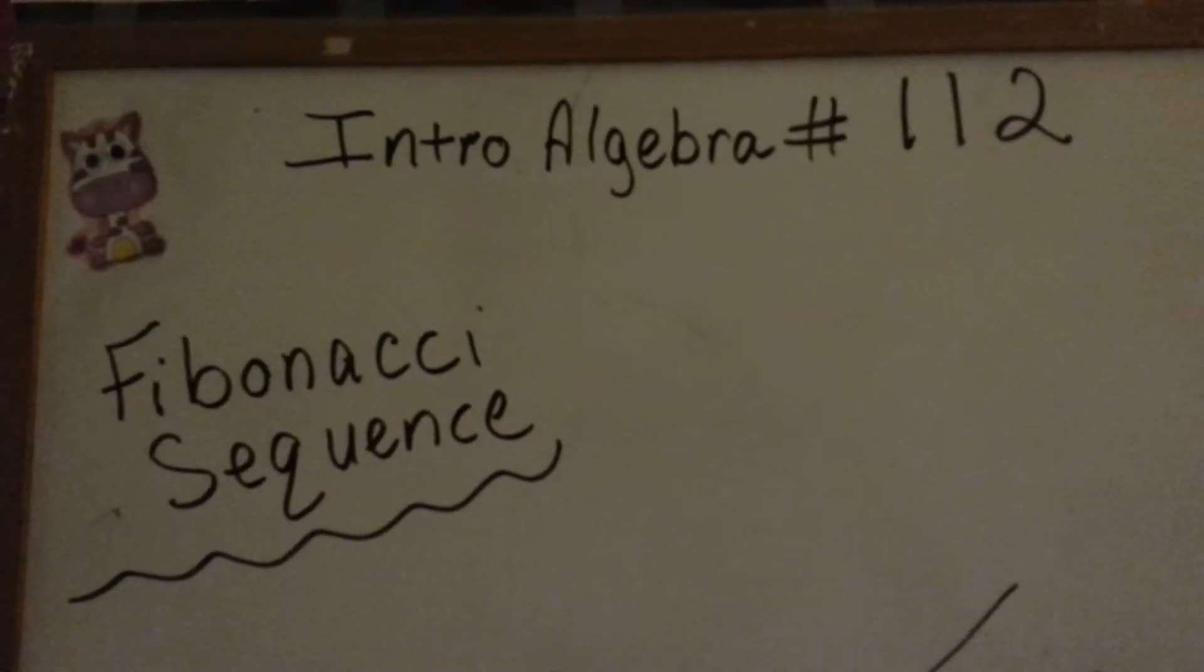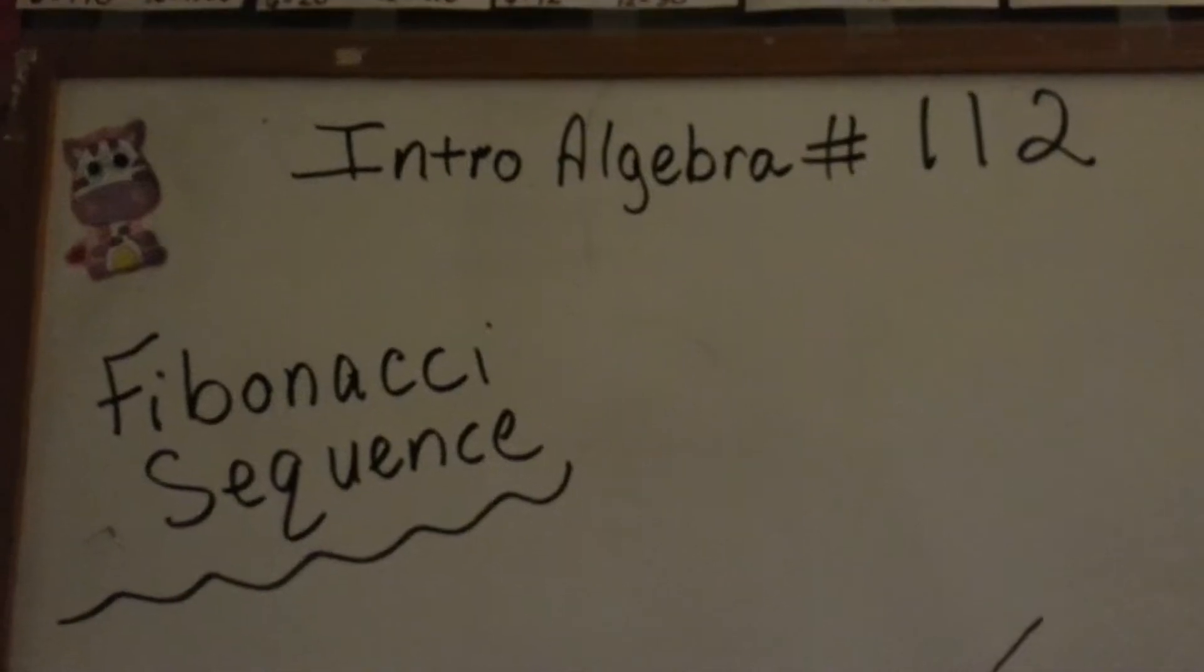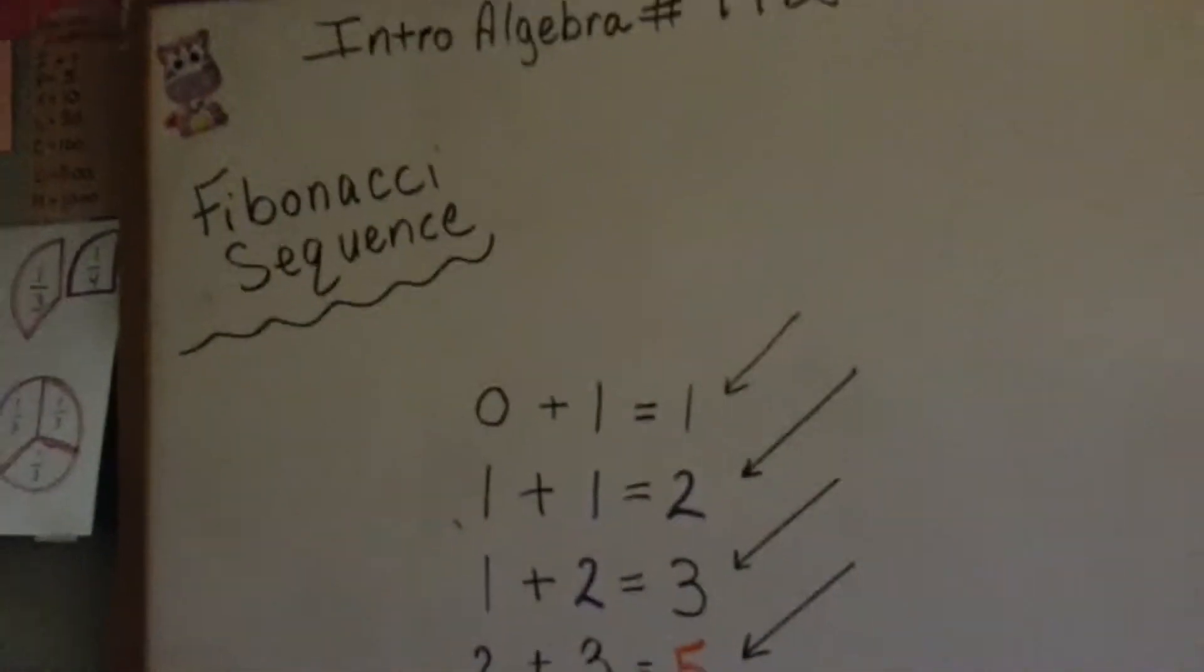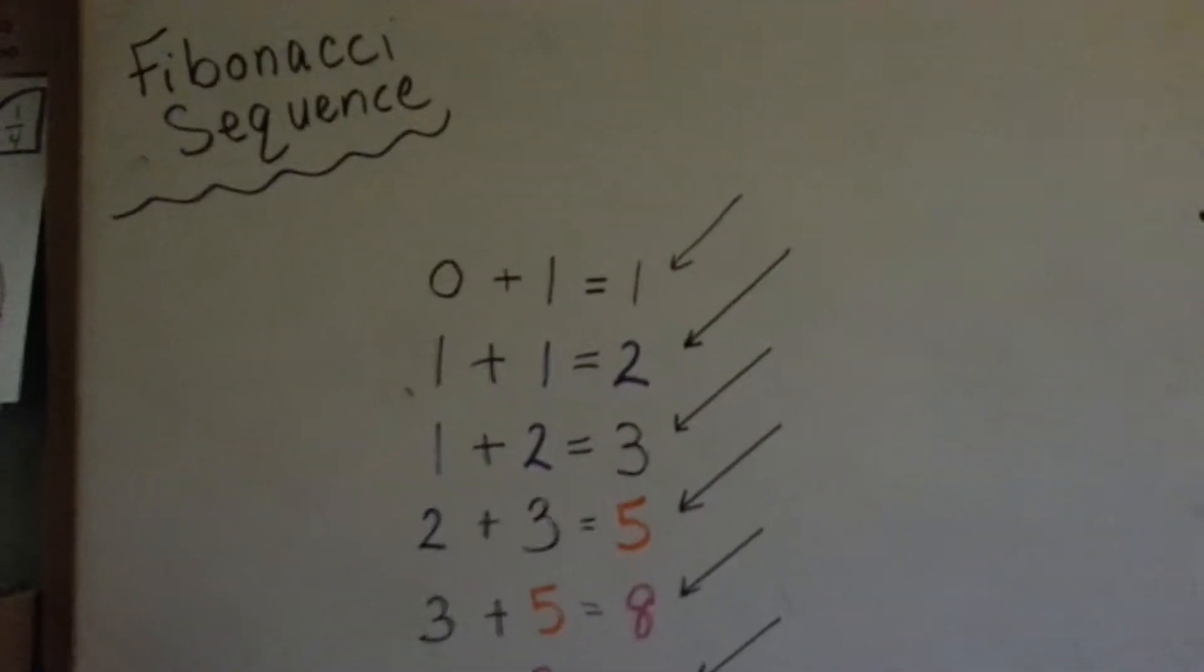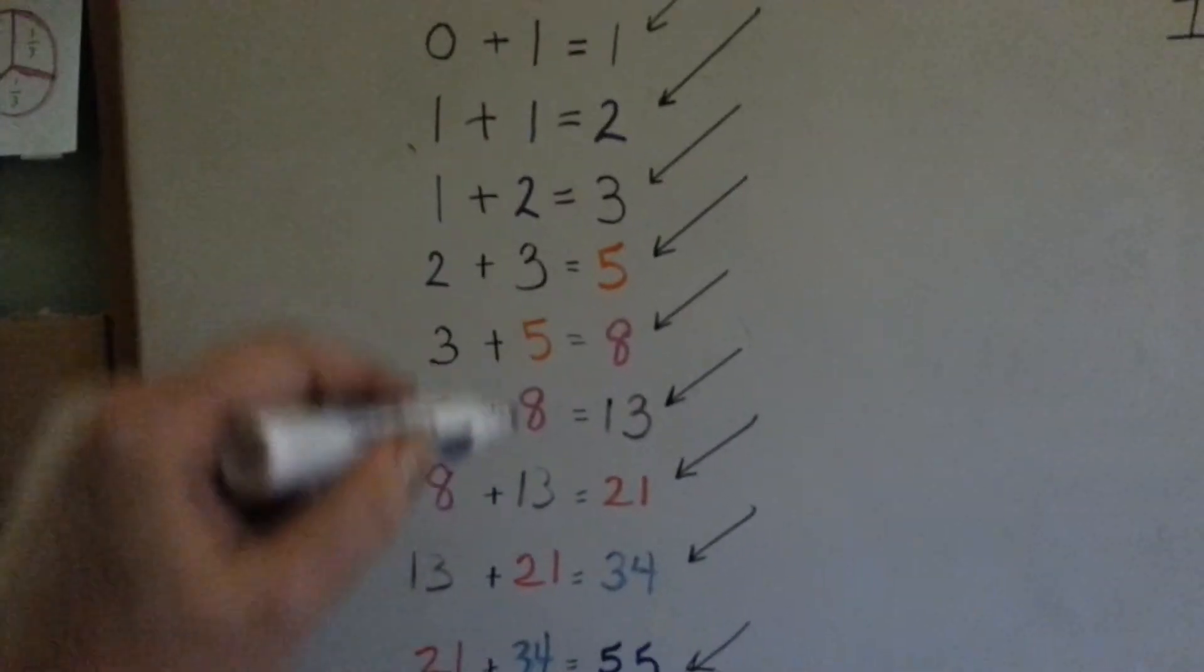Intro algebra number 112, the Fibonacci sequence. The Fibonacci sequence is sort of like Pascal's triangle, except we're just going to go straight down.